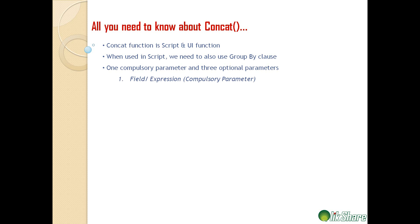The first parameter, which is compulsory, is the field or expression. You write the concat function and give a field name — it will generally concatenate all the field values and give you one long concatenated string. This may not be just a field; it can be a further nested expression. The first optional parameter is the delimiter — while field values are concatenated together, you can separate each value using a delimiter.